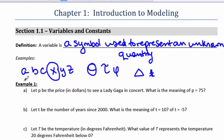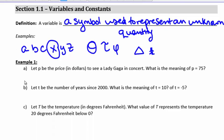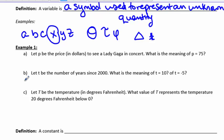In Example 1, we're going to let p be the price in dollars to see a Lady Gaga concert. What is the meaning of p equals 75? So if p is the price in dollars, then p equals 75 means that it costs $75 to see the concert.